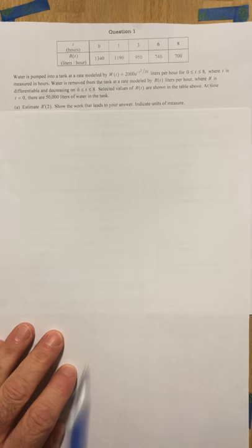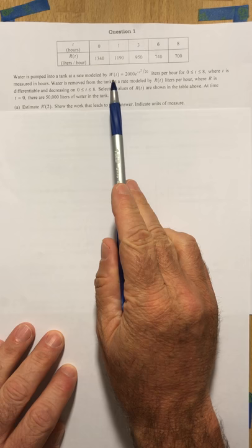All right, in number one, we've got some information presented in a table about the rate of water flowing into a tank. R is the rate it's flowing out, and W is the rate it's flowing in.